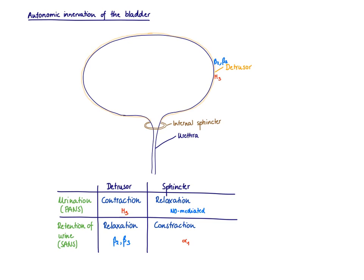Then the sphincters, as they need to contract, this needs to be an alpha-1 effect. Alpha-1 is GQ-coupled, which mediates smooth muscle contraction. So we're already done with the sympathetic nervous system that mediates the retention of the urine.